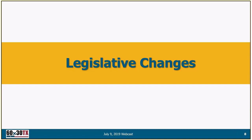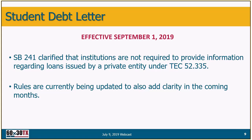Regarding legislative changes on the student debt letter: during the last session that ended last month, Senate Bill 241 clarified that institutions are not required to provide information regarding loans issued by a private entity under Texas Education Code 52.335. This is just a clarification — it was always the case under the law. We are updating the rules for this legislation, which will take some time. Until then, please send questions through Contact Us for guidance on implementing the student debt letter.